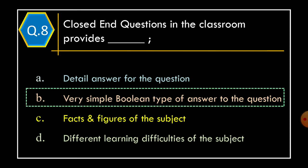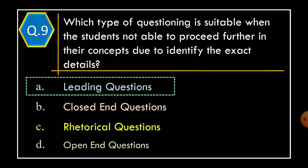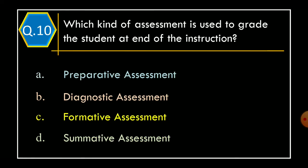Question 9: Which type of questioning is suitable when students are not able to proceed further in their concepts due to identifying the exact details? Option A: Leading questions. Option B: Closed-end questions. Option C: Rhetorical questions. Option D: Open-end questions. The correct option is Option A, Leading questions.